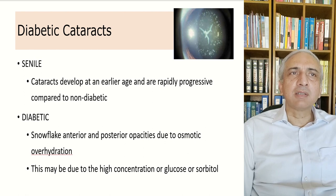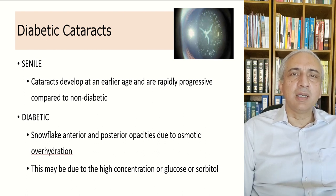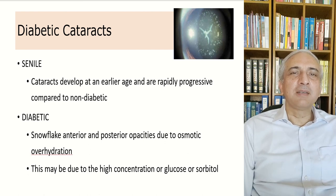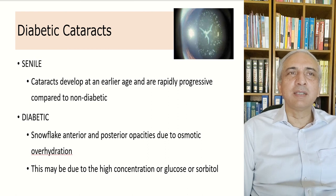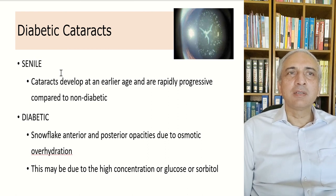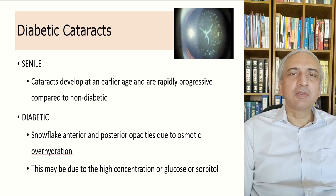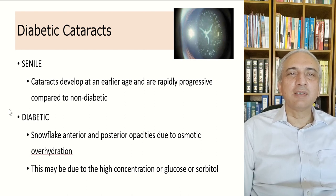Diabetic senile cataracts develop at an earlier age and are more rapidly progressive compared to non-diabetics. The snowflake cataract — with anterior and posterior opacities due to osmotic overhydration — may be due to high concentrations of glucose and sorbitol, as previously discussed.